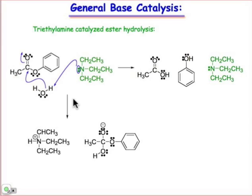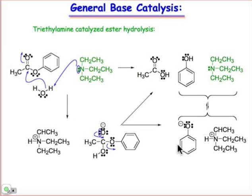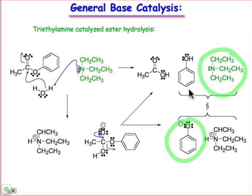This is the rate-determining step, and in that rate-determining step we have simultaneous deprotonation and nucleophile addition. That sets up a β-elimination, which expels the phenoxide anion. The phenoxide re-equilibrates with the conjugate acid of our base, regenerating the base catalyst so it's ready to enter the cycle once again. That first step is the key step of our general base-catalyzed ester hydrolysis.